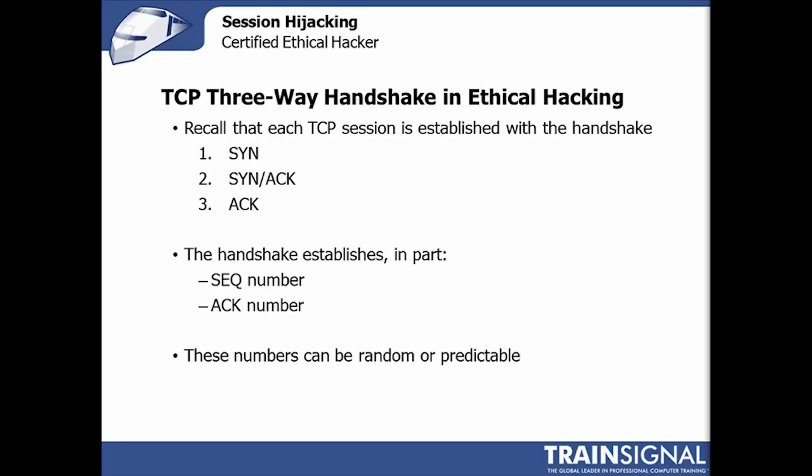These random sequence and ACK numbers provide a fringe benefit of making it harder to step into the middle of a TCP connection unless we can predict or control them — which is actually quite hard to do. Keep the TCP three-way handshake in mind as we look at one specific type of session hijacking and what it means to predict or understand sequence numbers.